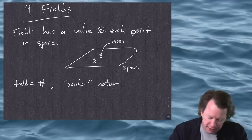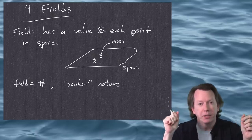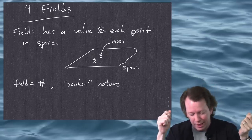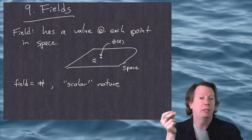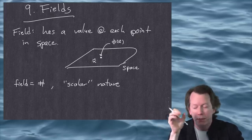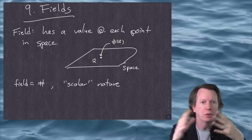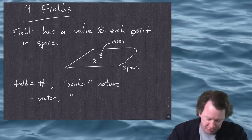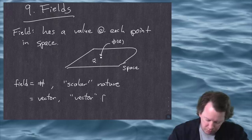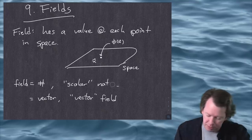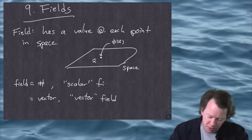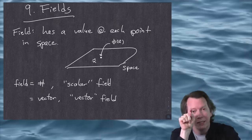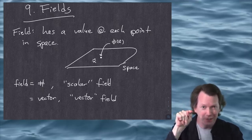We talked about scalars before as numbers you could multiply things by. The classic example — the only known example in nature of a fundamental scalar field — is the Higgs boson. We found it in 2012. The number could be a complex number or a collection of complex numbers, but it doesn't change as you rotate or look at things differently. Whereas if the field equals a vector, then you have a vector field. You've heard of the electric field, the magnetic field — at every point, there is a little arrow representing the electric or magnetic field vector.